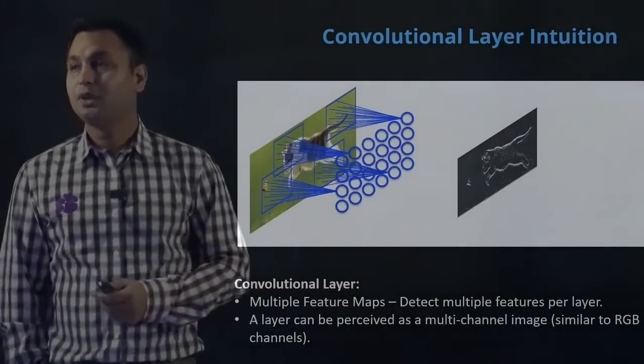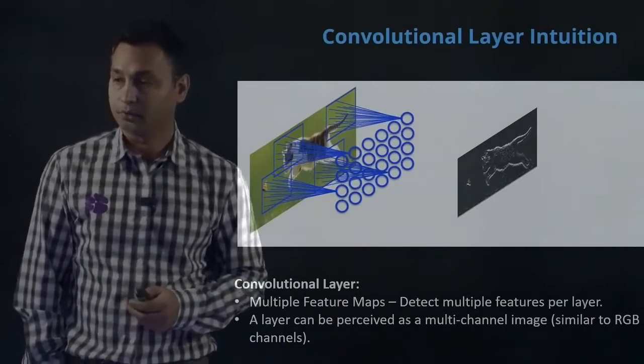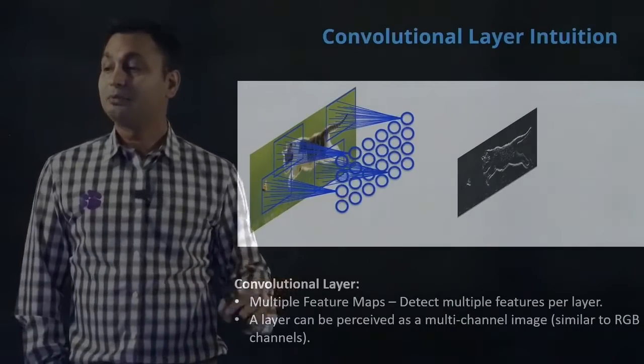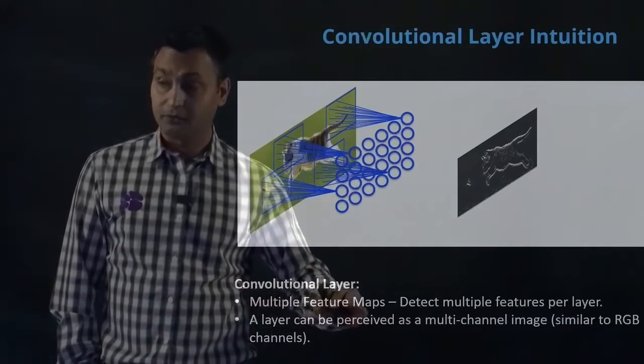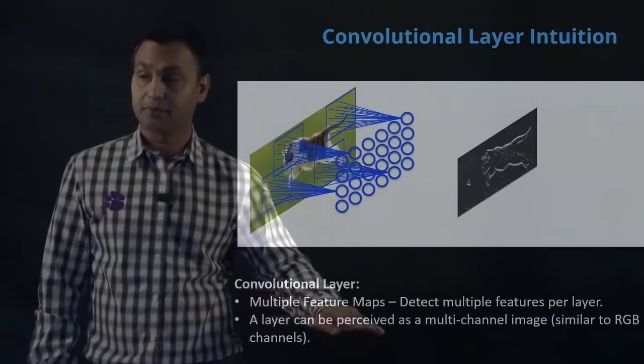Now let's understand the intuition behind this function. First, we typically have multiple different filters which help us create multiple feature maps. Essentially, we try to detect multiple features per layer using multiple filters.